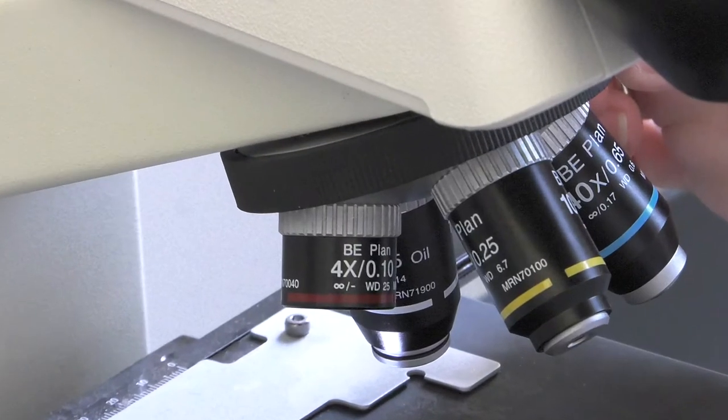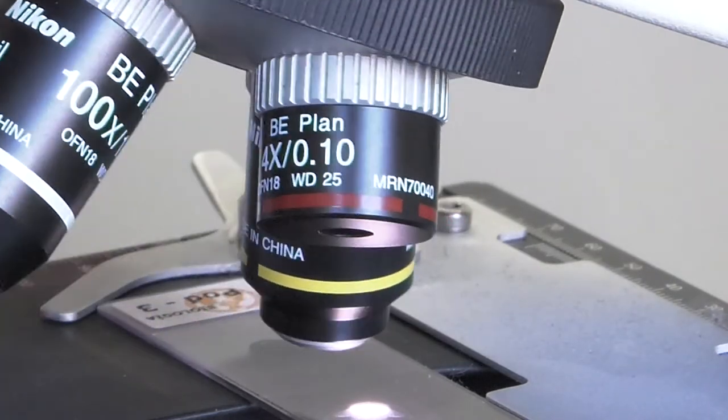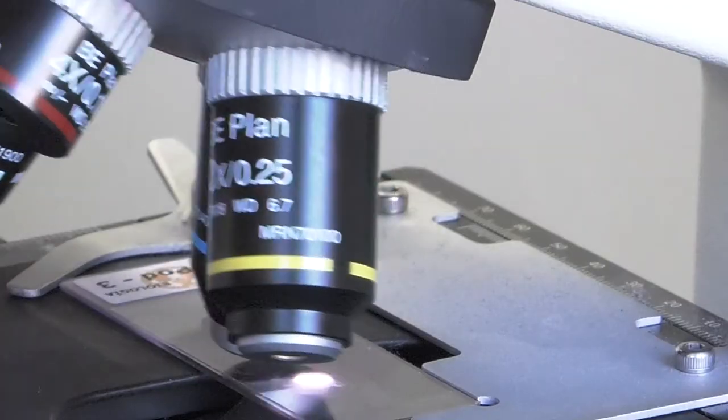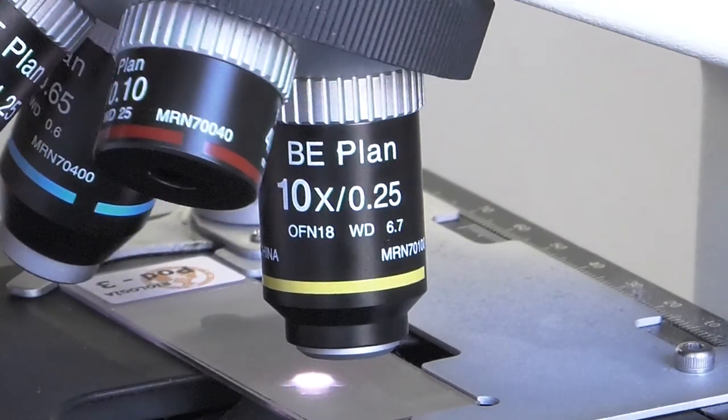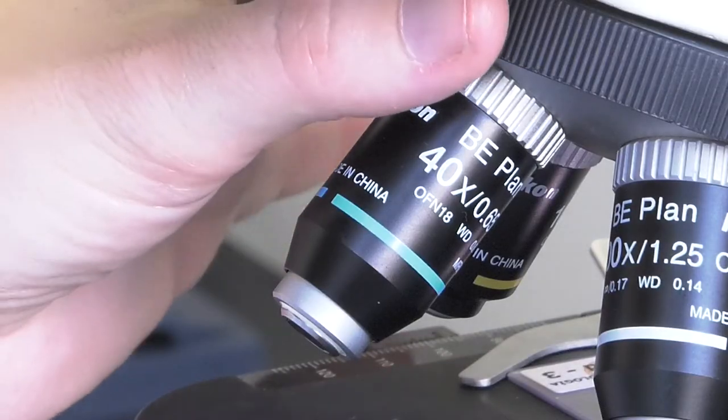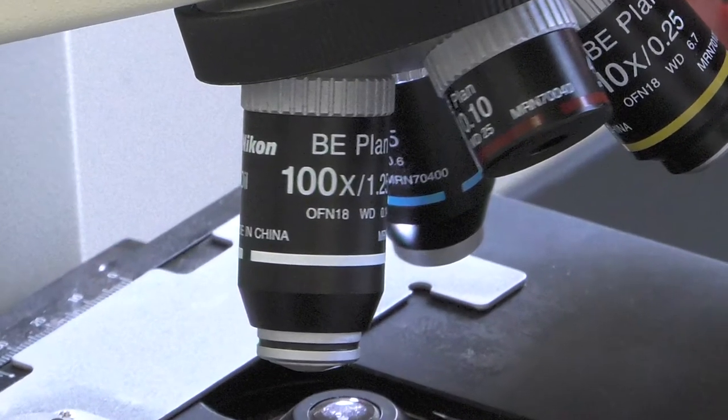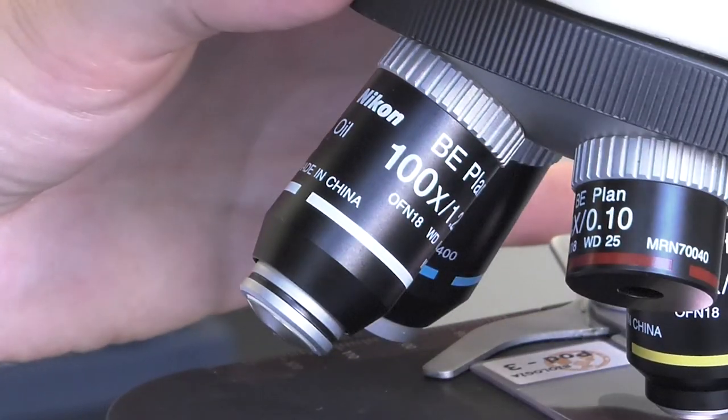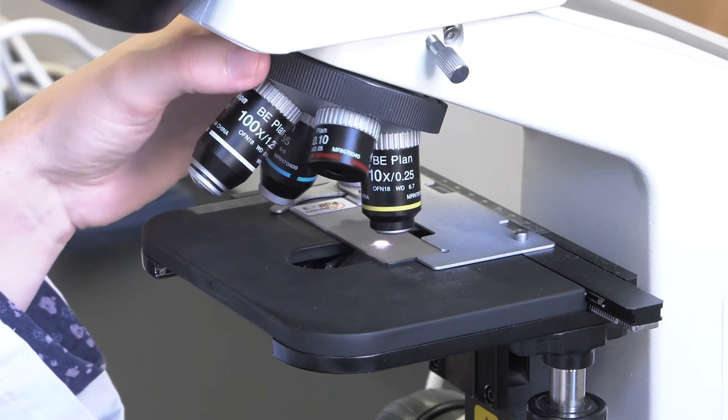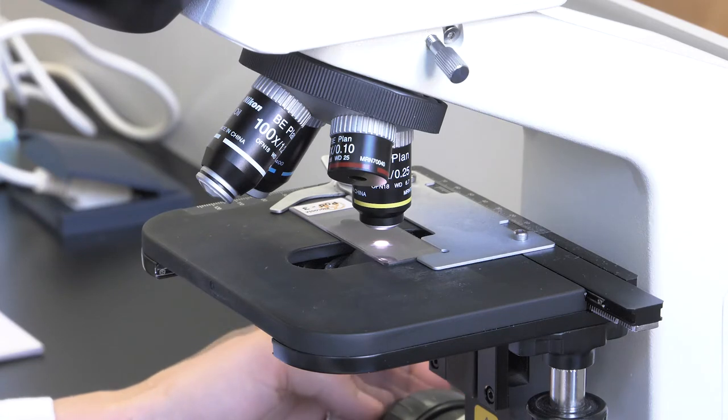The first objective lens, the one with the shortest tube, provides a magnification of 4x for the image size. The second objective lens, with a longer tube, provides 10x. The third objective lens produces 40x magnification. And the last lens produces 100x magnification. In order for the image of the sample to be visible by the observer, the chosen lens must be aligned with the condenser lens.